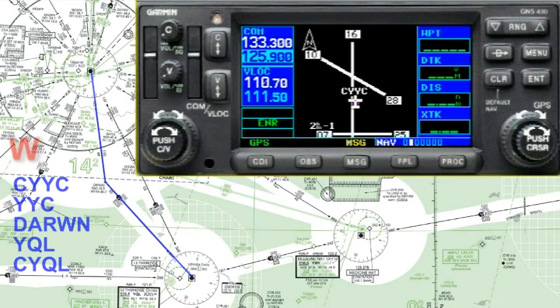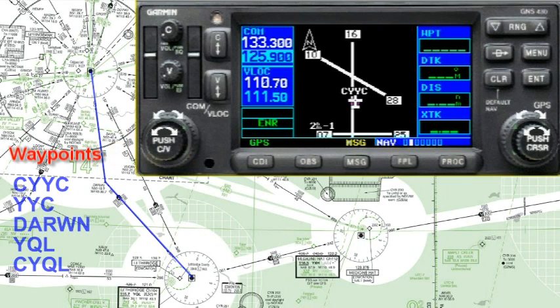I'm going to show you how to set a flight plan up for that and show you a few tips. To keep things simple, our alternate is Calgary, so in the event we're unable to land in Lethbridge, we'll come right back here to Calgary.